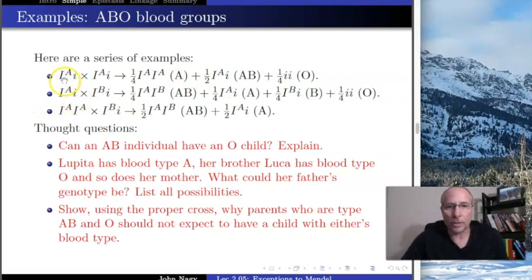What about this one? Same sort of thing. We can do the exact same thing. In fact, we can always do this. The big I^A, big I^B is the firsts. That happens a quarter of the time. Big I^A, little i, that's going to be type A. Happens a quarter of the time.